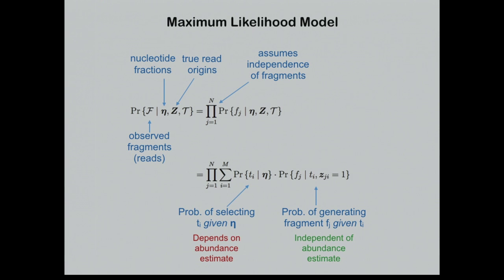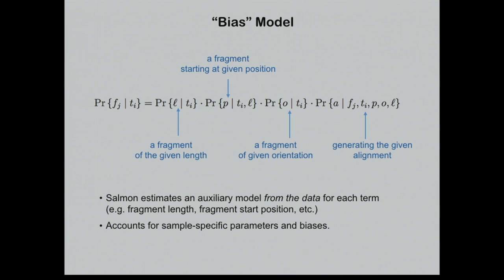One of the interesting parts is this term: the probability of observing a particular fragment given a known transcript. I'm calling this the bias model — or in the preprint, the auxiliary model. It's called the bias model because it doesn't depend on the nucleotide fractions; it only depends on the sequence of the transcript generating the read. This term is one of the key advantages of the Salmon software.